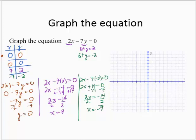So I'm plotting the points. I have 0, 0; 7, 2; and negative 7, negative 2. These three points appear to be collinear, so we will draw the line through them.